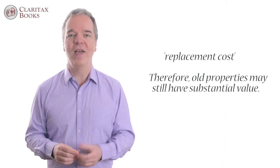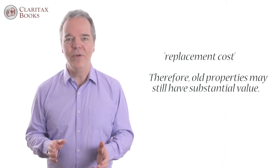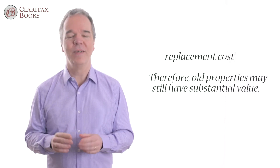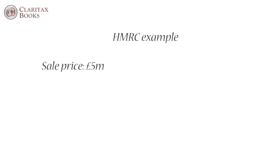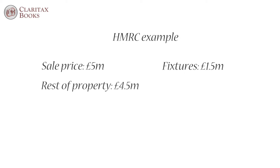What this means is that a dilapidated property where the apparent value of the fixtures is very low may in fact permit a substantial capital allowances claim. We can illustrate this with an HMRC example from the relevant Valuation Office manual. An existing building is being sold for five million pounds. The replacement cost of the fixtures is calculated as one point five million. The rest of the property would cost four point five million to replace and the bare site value is two million pounds.